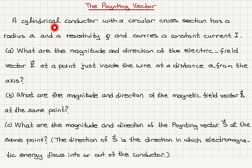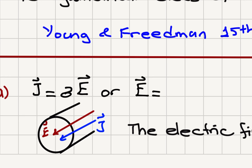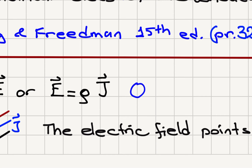A cylindrical conductor with a circular cross-section has radius A, resistivity rho, and carries constant current I. Part A: what are the magnitude and direction of the electric field E at a point just inside the wire at a distance A from the axis? The current flows in a direction that also defines the electric field direction. The current density J and electric field are related by Ohm's law: J equals conductivity sigma times E, or equivalently, E equals resistivity rho times J.